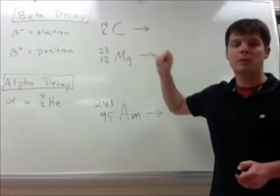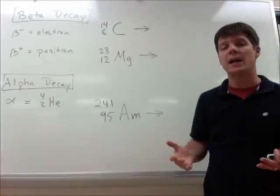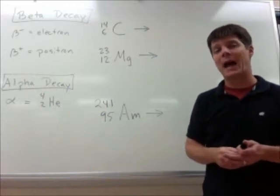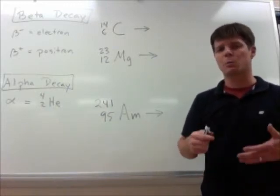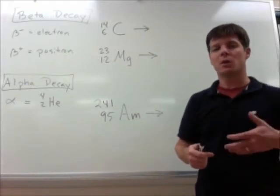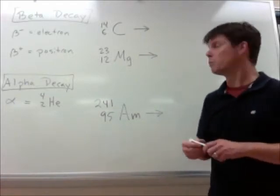So first let's consider the example of beta minus decay. An example of this is what happens to atoms of carbon-14. Now the nuclei of carbon-14 atoms are unstable. They're going to undergo the decay process in order to produce a more stable nucleus. So let's take a look at the things that are going to be produced.